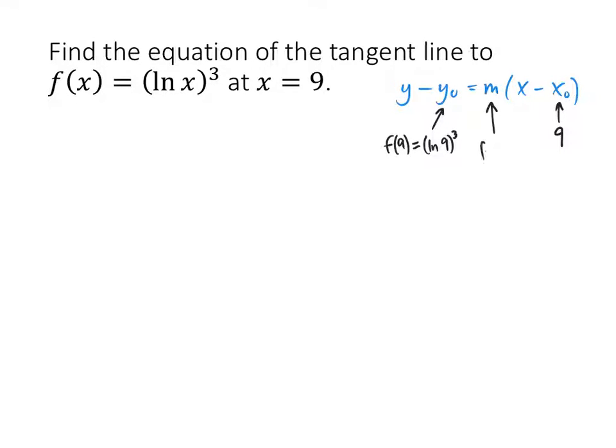So now for the m, that's going to be f prime of 9. That's the slope of my function at x equals 9. So now my task becomes to find a derivative of this f of x formula and then plug 9 into that derivative, and that will be the slope of this line that I'm looking for.